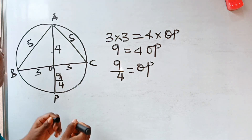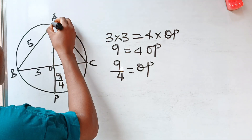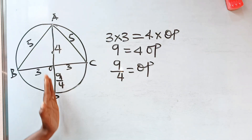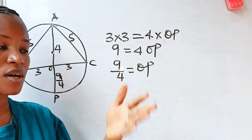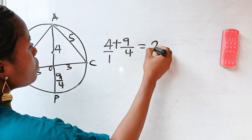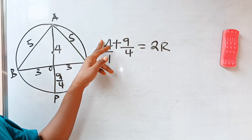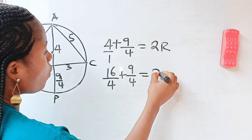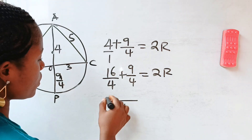Looking closely, this line passes through the center of the circle down to the other side — so this is our diameter. The diameter equals four plus nine over four, which equals two r. Finding the common denominator of four: sixteen over four plus nine over four equals two r, so twenty-five over four equals two r.